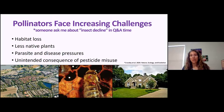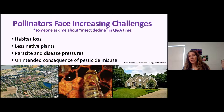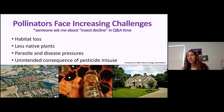With habitat loss there's less native plants, and there are parasite and disease pressures. For honeybees, parasite and disease pressures are really the biggest issue. There are lots of issues: monocultures not having as diverse a feeding resource, and the unintended consequences of pesticide misuse. A tool is only as good as we use it well. When we use a pesticide outside the safety boundaries of the label, we're misusing the tool, and there are going to be negative consequences.